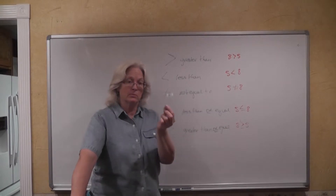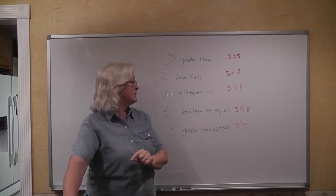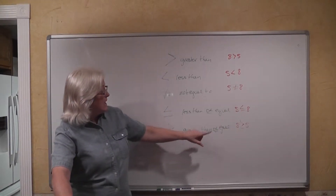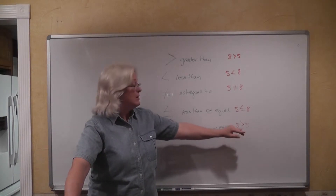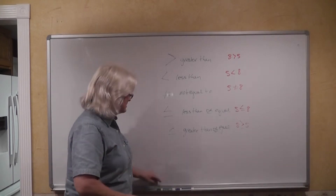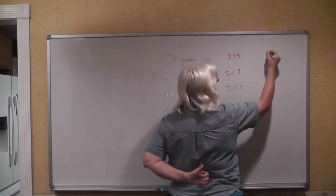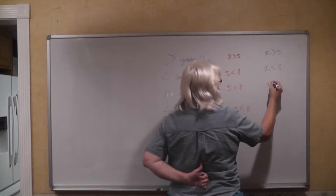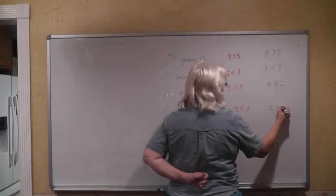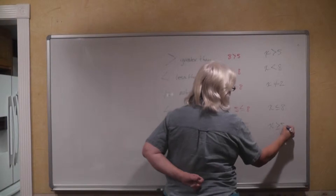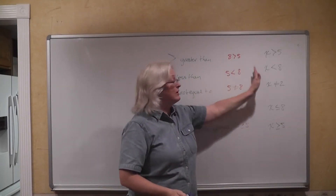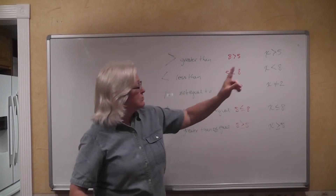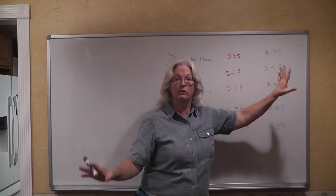When you have a disjunction or an 'or,' that means only one of those conditions has to be true. Is five equal to eight? No, but five most certainly is less than eight. Eight is greater than or equal to five — eight is not equal to five, but it is greater than five. Another example might be: x greater than five, x less than eight, x not equal to two, x less than or equal to eight, x greater than or equal to five. These expressions with the variable sort of look like equations, but they're not — they're called inequalities because we're having statements that are not equal.